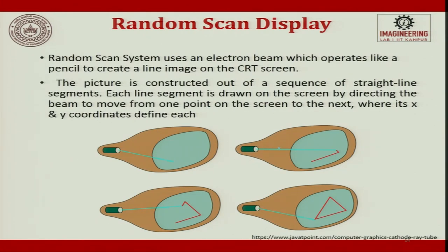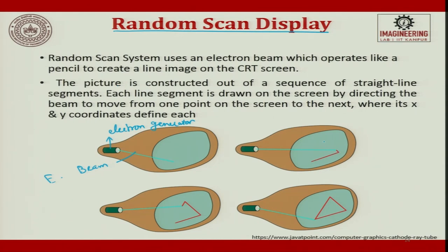Now let us look into random scan display — how does it work? Random scan display uses an electron beam. You see a beam coming out from an electron generator. A random scan system uses an electron beam which operates like a pencil to create a line image on the CRT screen. It hits, then it draws, then it goes. The picture is constructed out of a sequence of straight lines — segments 1, 2, and 3.